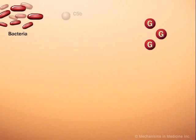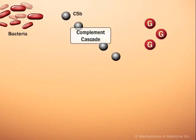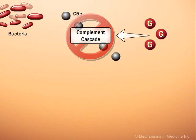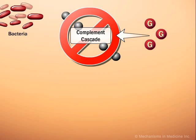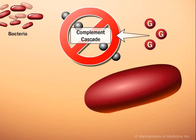Hyperglycemia inhibits the proper activation of the complement cascade, thereby reducing another pathway of the immune system.